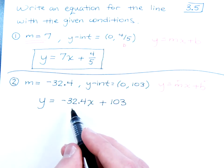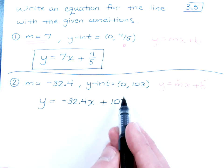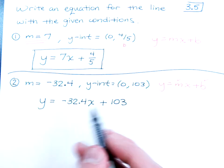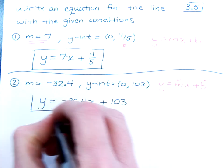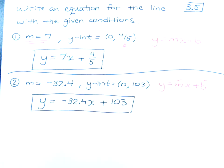As you can see here from this equation, you have a slope of negative 32.4, and the 103 would lead you to a y-intercept of 0 comma 103. So there is your solution, your answer.